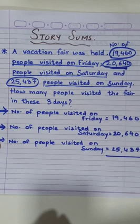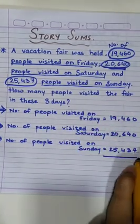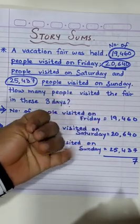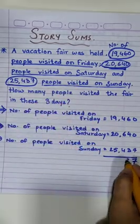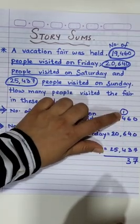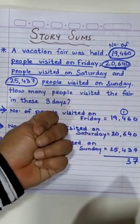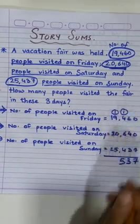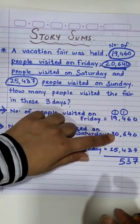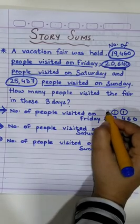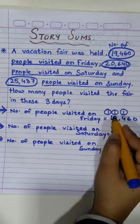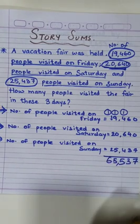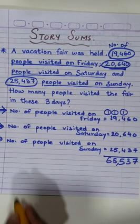Now we simply have to add these three numbers: 19,460 plus 20,640 plus 25,437. Working through the addition column by column, the answer comes out to 65,537 people.